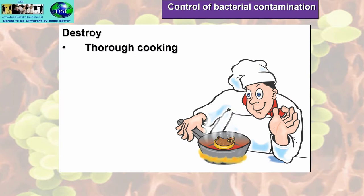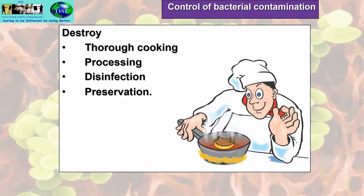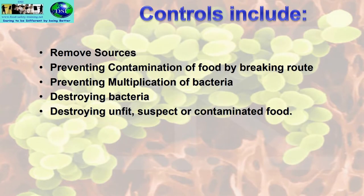For further control, we can destroy bacteria through thorough cooking. The Food Standards Agency stipulates cooking food to 75 degrees C. From a food quality point of view, 60 to 63 degrees C is fine, but since this is a food safety course, take the food safety stance. Other controls include thorough processing, disinfection, preservation, removing sources, preventing contamination by breaking the route, preventing bacterial multiplication, and destroying unfit, suspect or contaminated food.